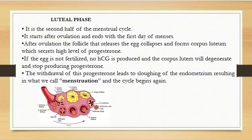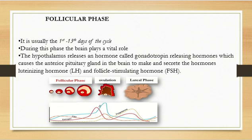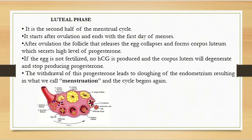So what happens after ovulation? The follicle that released the egg tends to collapse. Looking at the diagram, this is when the egg was released, and after ovulation day, you can see the follicle is now empty and collapsed. When it collapses, it forms what we call the corpus luteum. When the corpus luteum is formed, it secretes high levels of progesterone. As you can see in the diagram, progesterone is at its peak during the luteal phase.